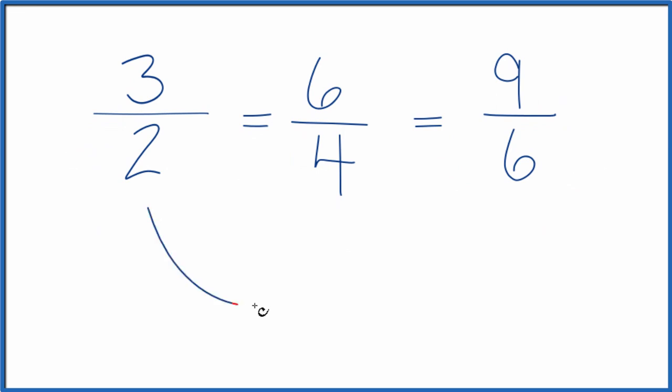Let's change it to a mixed number. 2 goes into 3 one time with 1 left over. We bring the denominator across. So 1 and 1 half, that's also equivalent to 3 halves.